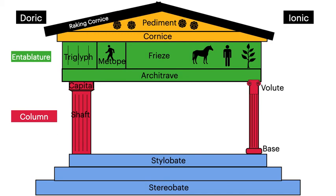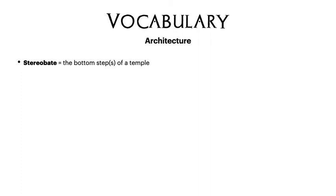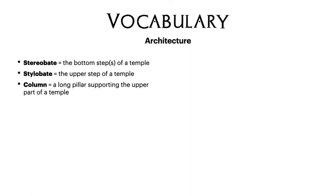These are the main words you need to know and be able to use when talking about the Parthenon in your essay. Please make sure you've got these down on your diagram in your workbook. Starting from the very bottom of the temple: the stereobate is the bottom steps — think of stereo as being the very bottom — with the stylobate as the upper step. Then we have the columns, those long pillars which support the upper part of the temple. The shaft is the main middle part, and the base is the bottom — only Ionic columns have the base, the Doric ones don't.